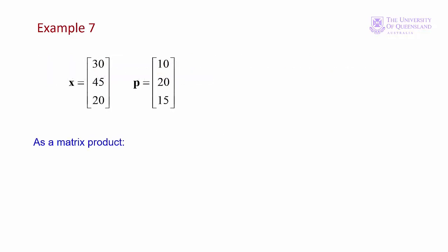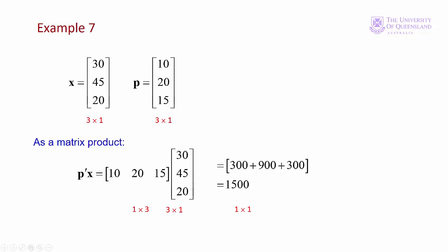We can do that as a matrix product. We have two column vectors, a three by one and a three by one. So to make those matrices compatible, we take the product p prime x, so we have one by three and a three by one, and gives us a one by one. Of course that's also equivalent to the dot product x dot p.